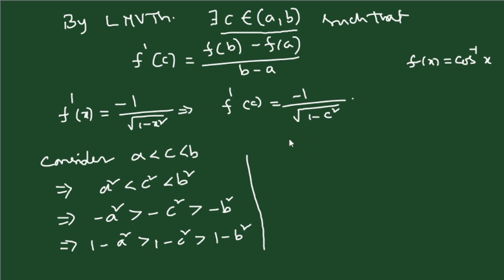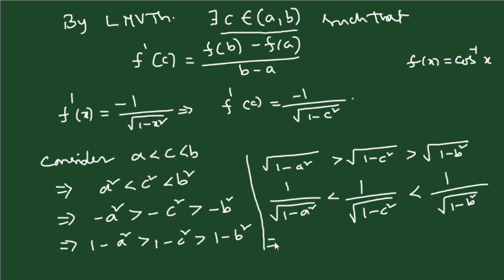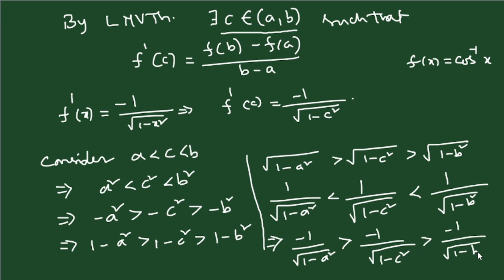Now take the reciprocal. Remember: when you take the reciprocal of an inequality, the inequality reverses. So we get: 1/√(1 − a²) < 1/√(1 − c²) < 1/√(1 − b²). Now multiply throughout by −1, which again reverses the inequality: −1/√(1 − a²) > −1/√(1 − c²) > −1/√(1 − b²).